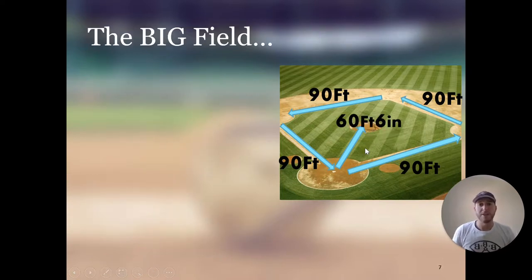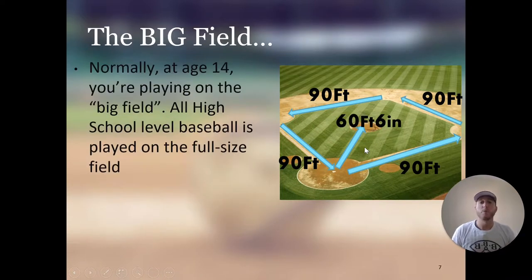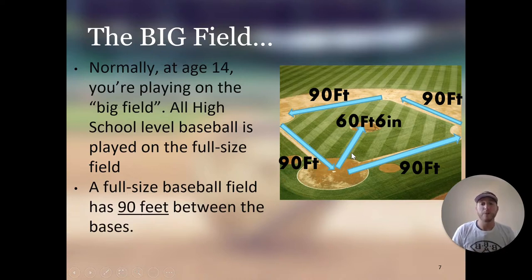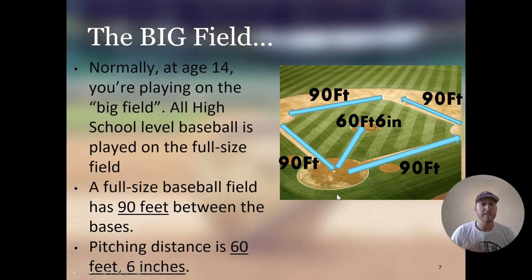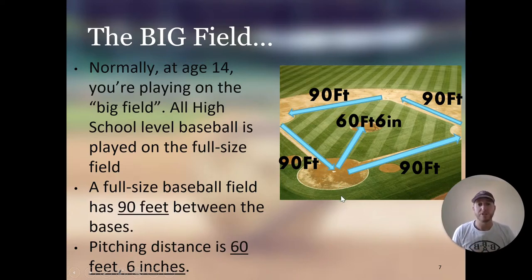Normally at age 14, you're playing on the big field. All high school level baseball is played on the full size field. A full size baseball field has 90 feet between the bases and the pitching mound is 60 feet 6 inches from home plate. This goes from high school all the way up through the major leagues, and it will stay 90 feet and 60 feet 6 inches.